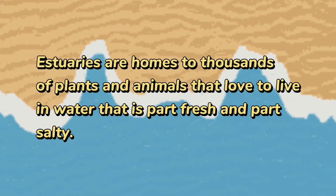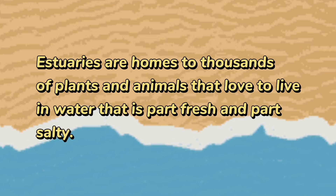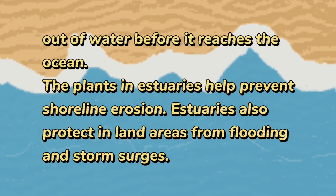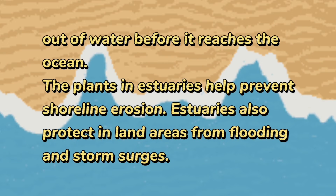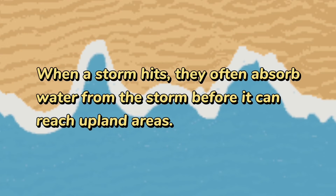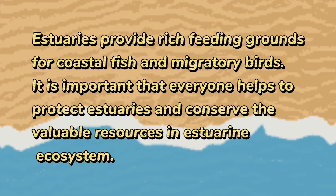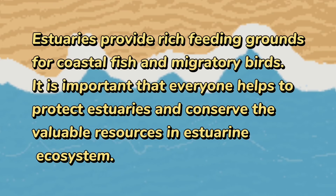Estuaries are homes to thousands of plants and animals that live in water that is part fresh and part salty. They are nursery areas for many important organisms and help maintain a healthy environment by filtering waste materials out of water before it reaches the ocean. The plants in estuaries help prevent shoreline erosion, protect inland areas from flooding and storm surges, and provide rich feeding grounds for coastal fish and migratory birds. It is important that everyone helps protect and conserve estuary ecosystems.